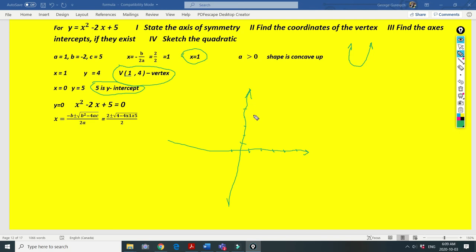And our vertex is 1, 4, and y-intercept is 5. This is 5. This is 4. This is 0. This is 1. So our graph will be something like that.